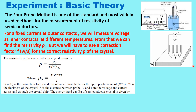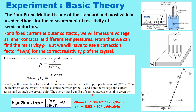At different temperatures the energy band gap EG of the semiconductor crystal is given by EG equal to 2K into the slope of log rho versus 1/T, where K is the Boltzmann constant. Its value is 8.62 into 10 to the power minus 5 electron volt per Kelvin, or in Joules it is 1.38 into 10 to the power minus 23 Joule per Kelvin.